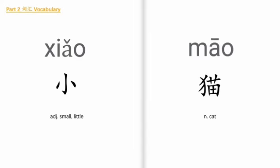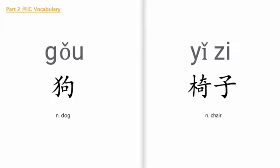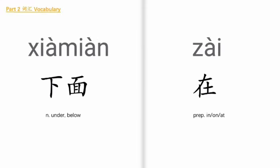Part 2, 词汇, vocabulary. 小, 猫. 在, 那儿, 狗, 椅子.